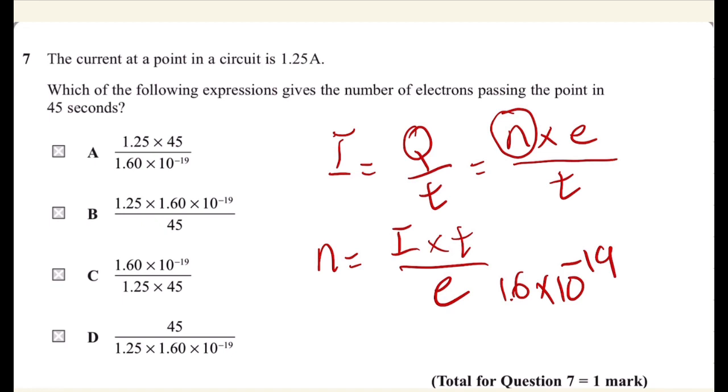So this one means that the current is 1.25 and the 45 seconds, which is the time taken, and the value of the charge 1.6 times 10 power by negative 19. So the correct answer is A.